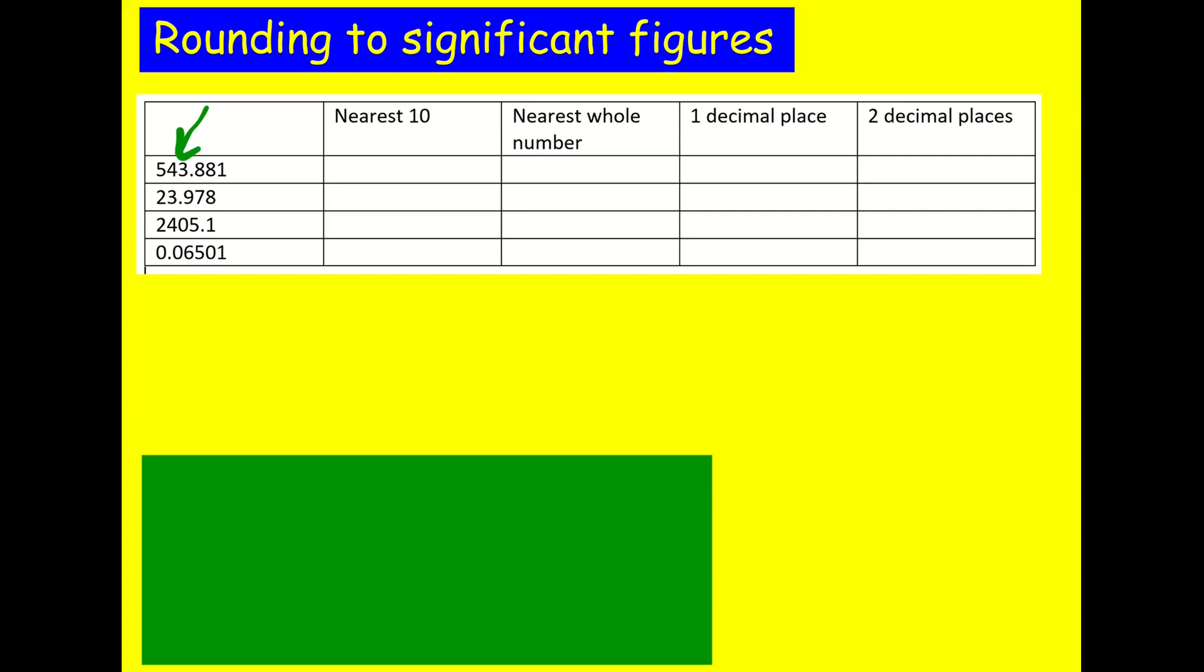3 or 4, we keep the 4 the same. If it's 5, 6, 7, 8 or 9, we would round up to 5. We would then have to change the 3 to a 0 because that will indicate place value. So the final answer will be 540.